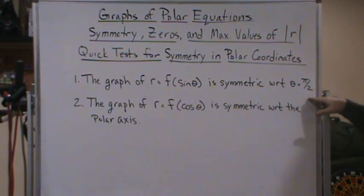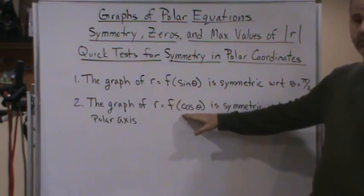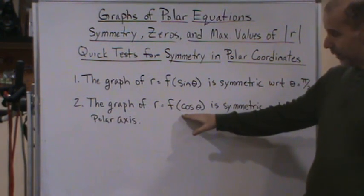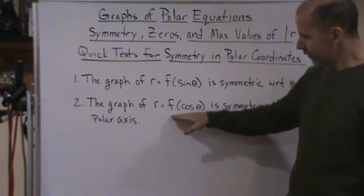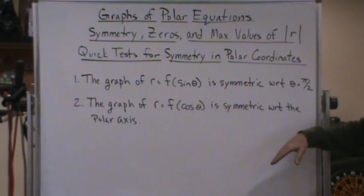If the graph of r is a function of cosine theta, then we know the graph of that equation or that function is going to be symmetric with respect to the polar axis.